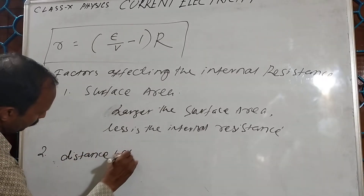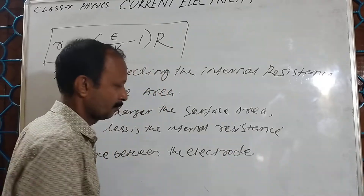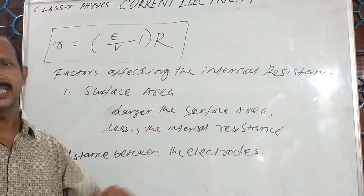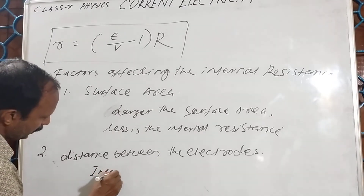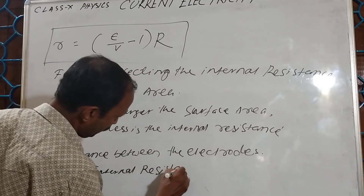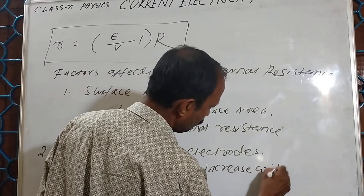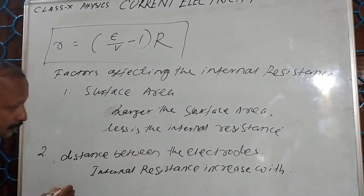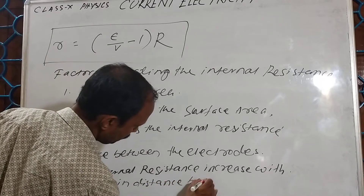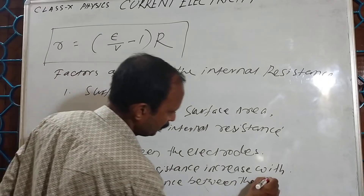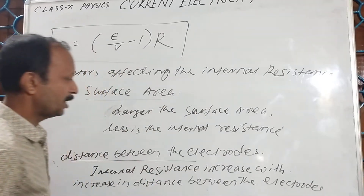The second factor is the distance between the electrodes. When the distance between the electrodes increases, resistance increases. So internal resistance increases with increase in distance between the electrodes.